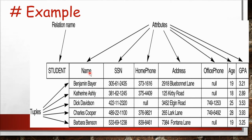For example, consider a student table with attributes: name, SSN (social security number), home phone number, address, office phone, age, GPA, etc. Each tuple is uniquely identified by the SSN number, meaning each student has an associated unique SSN. The relation name, attributes, and domain constraints — such as age being greater than 18 — illustrate how a relation is structured and managed.